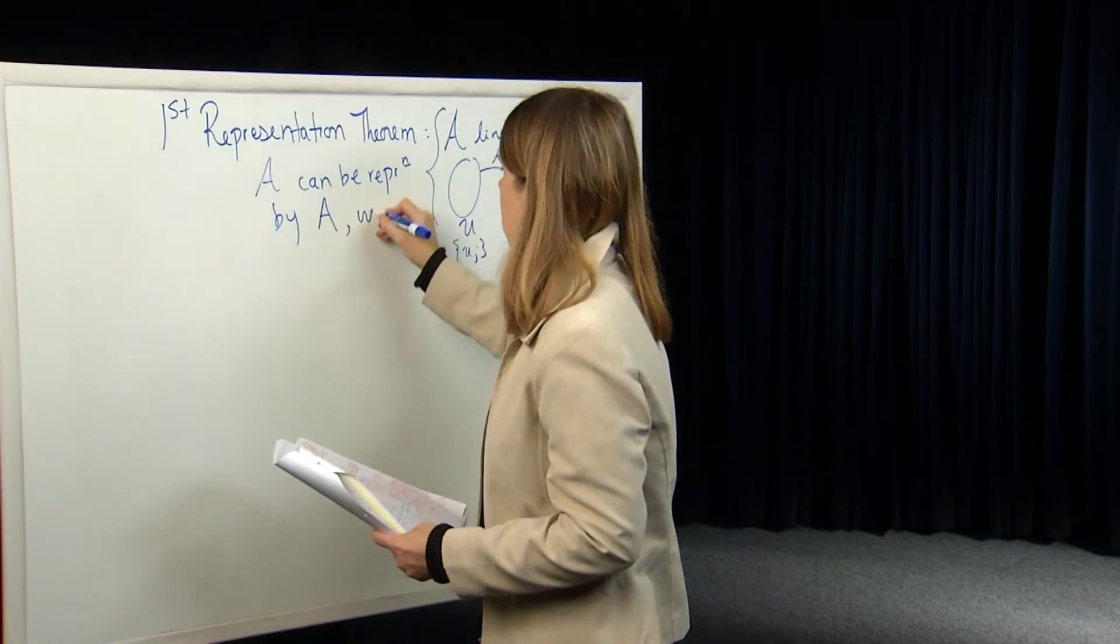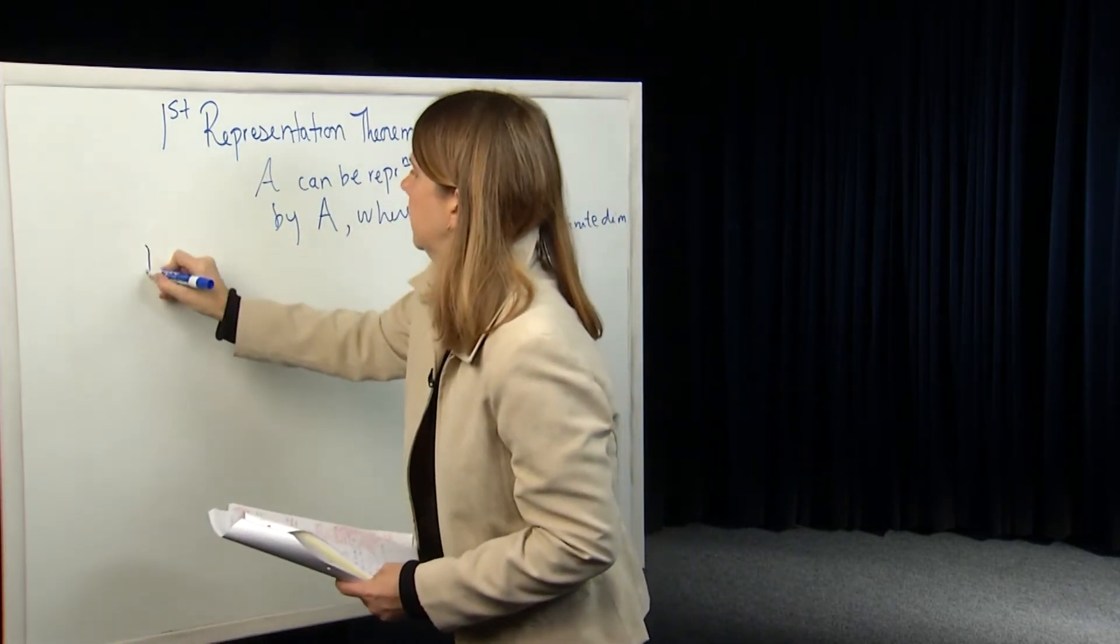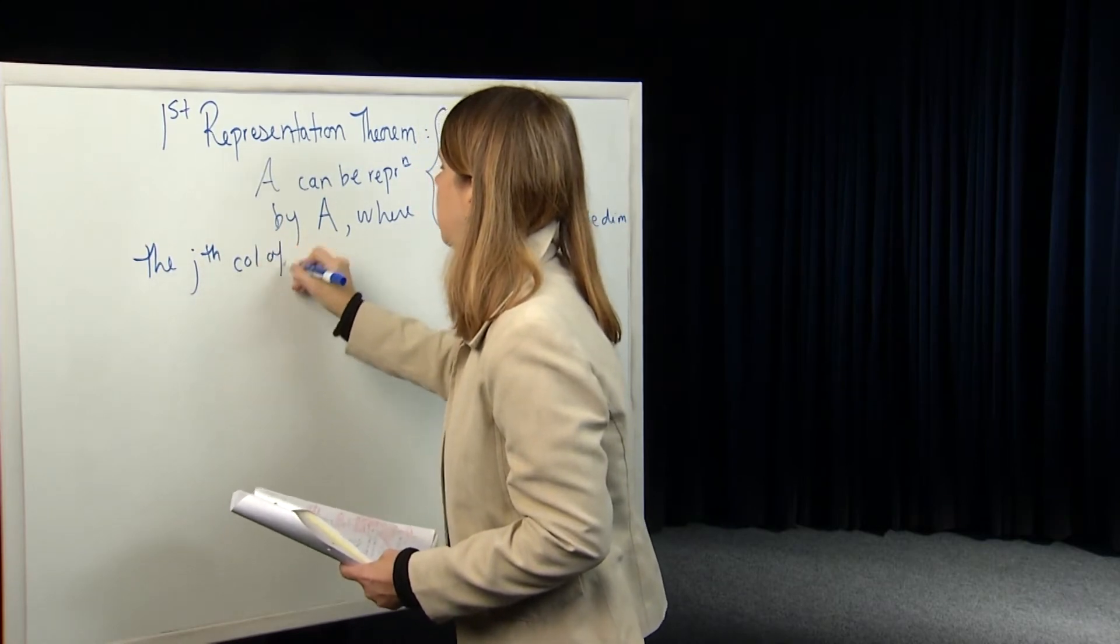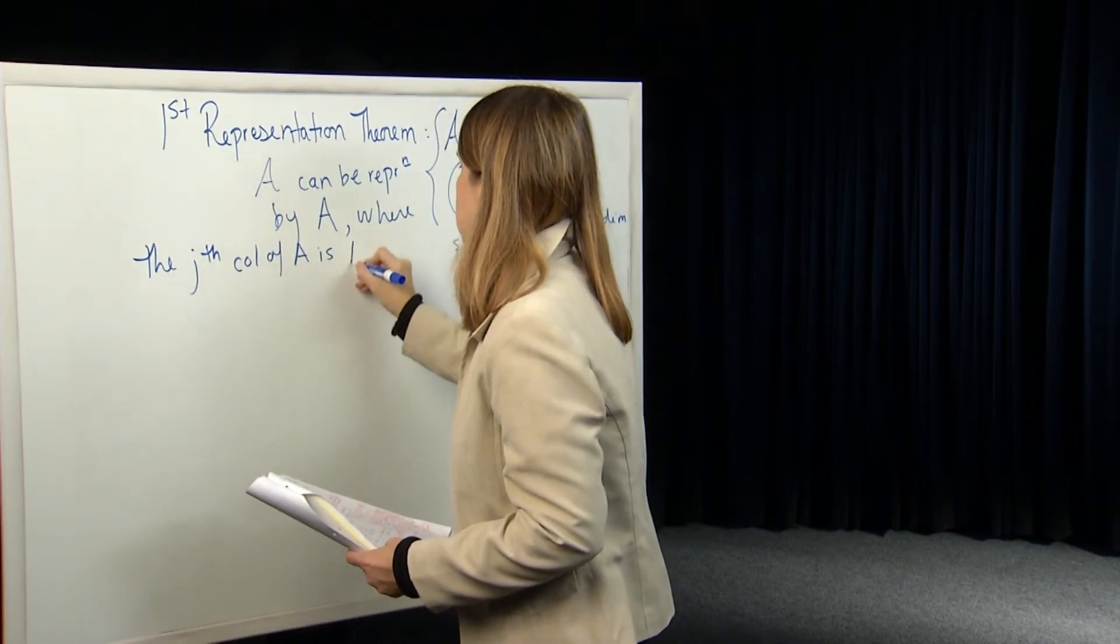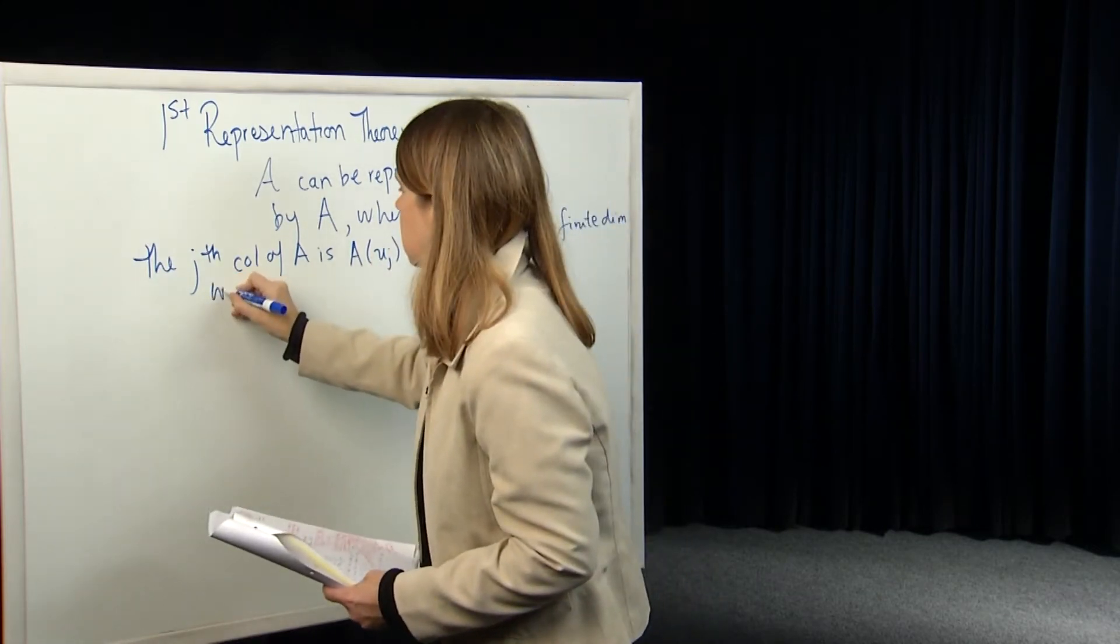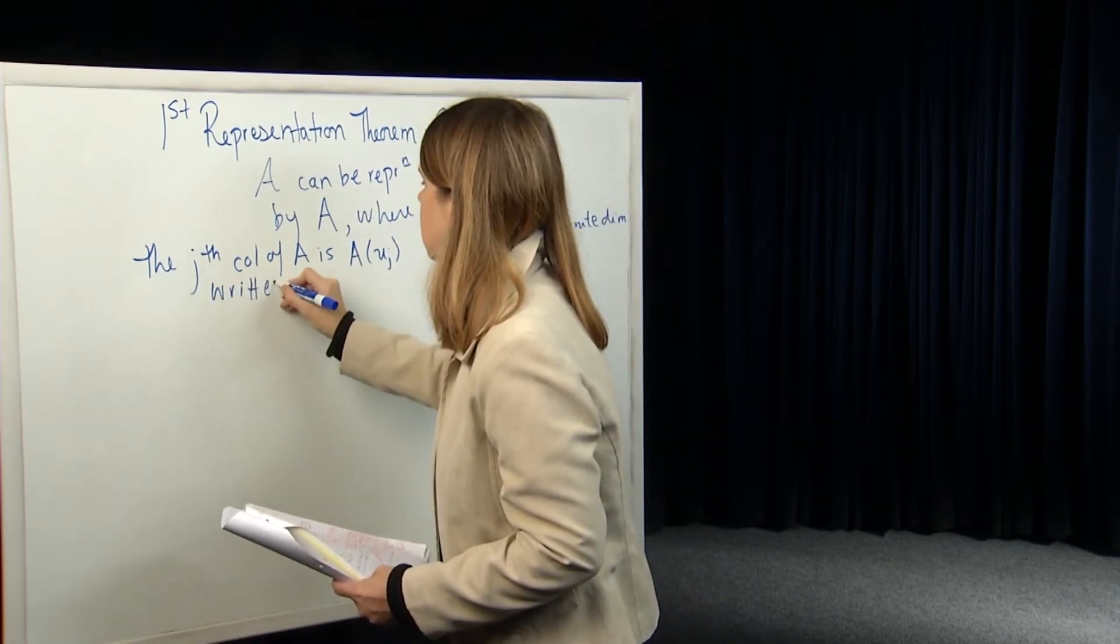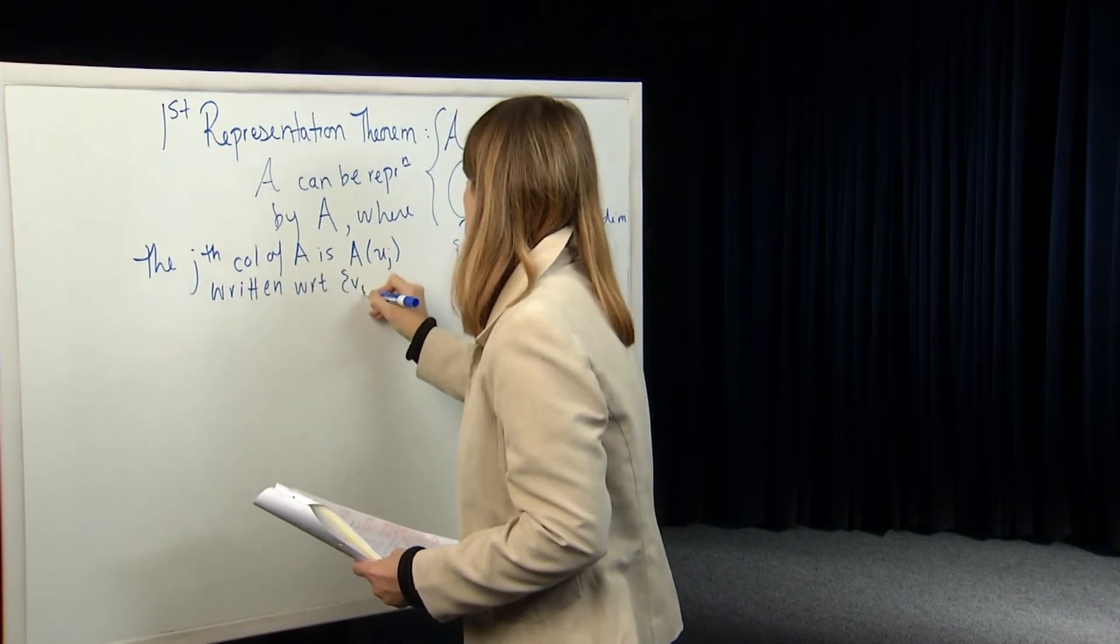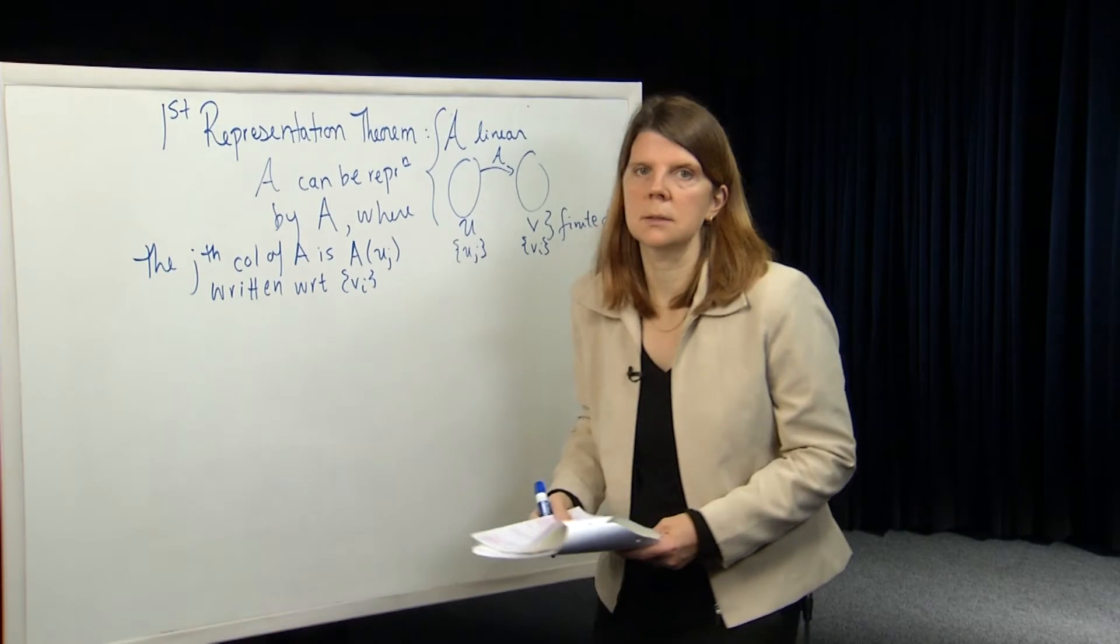So if we think about a basis here as the UJs, and a basis over here as the VIs, then that first representation theorem says the following: that the Jth column of the matrix A is A of UJ written with respect to the VIs, with respect to the basis over in the codomain, the VIs.